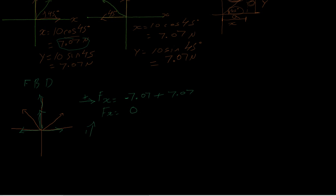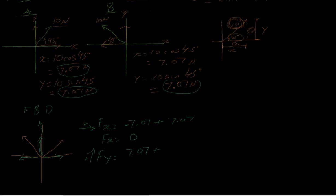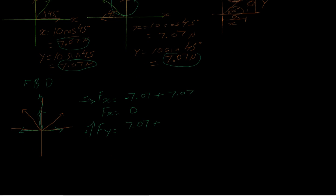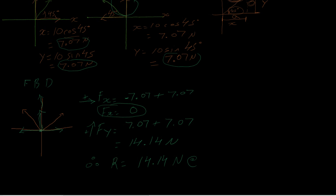For the y-forces, the sum of Fy: the first y component is 7.07 upward (positive), and the second y component is also 7.07 upward. Adding both gives 14.14 newtons. Since Fx = 0, the resultant goes straight up. Therefore, the resultant is 14.14 newtons at 90 degrees.